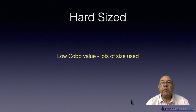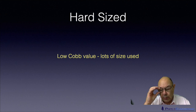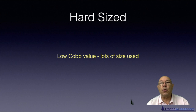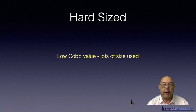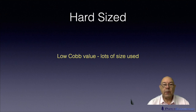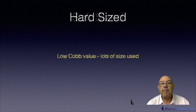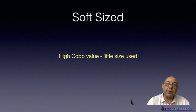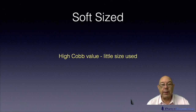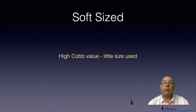Then you've got the term hard sized — a qualitative expression for how well sized your sheet is. If you have a lot of sizing agent in and it's very water repellent and really holds the water right on the surface, you would say it was hard sized, giving very low Cobb values. The opposite of hard sized is soft sized — where you only use a small amount of sizing agent and the paper will absorb some water, so it's only soft sized.